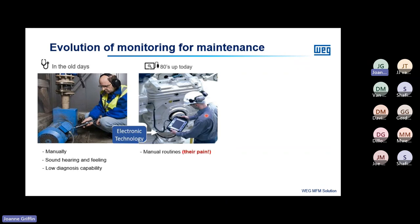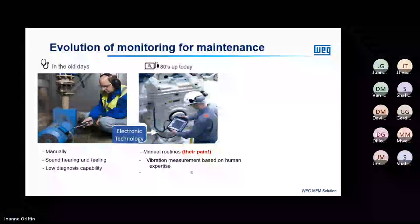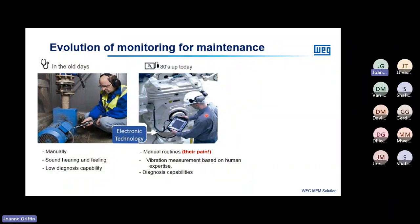With the advancement to electronic technology, the routines are still manual — and it's really painful. Vibration measurement is based on human expertise, making it subjective rather than objective. It depends on the person doing it; some are more accurate than others in knowing exactly where to place the probe, and it varies from person to person. Additionally, if a diagnostic is done today and a problem occurs an hour later, it doesn't tell you what is going to happen to the machine in the future.